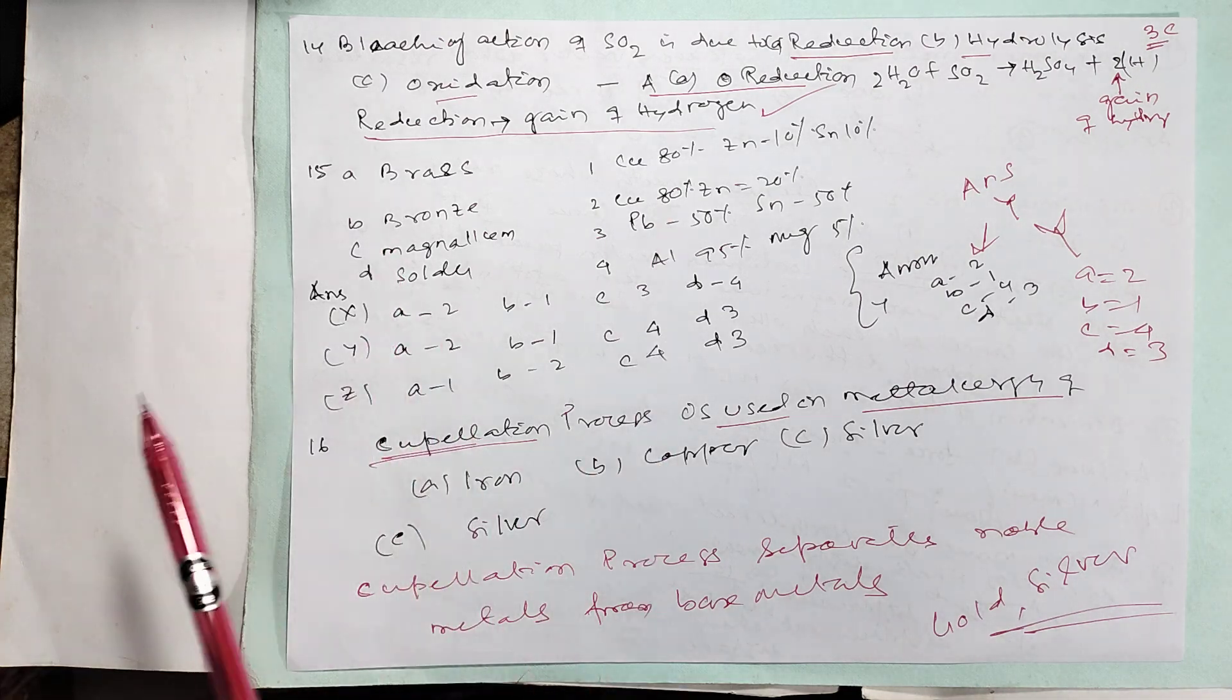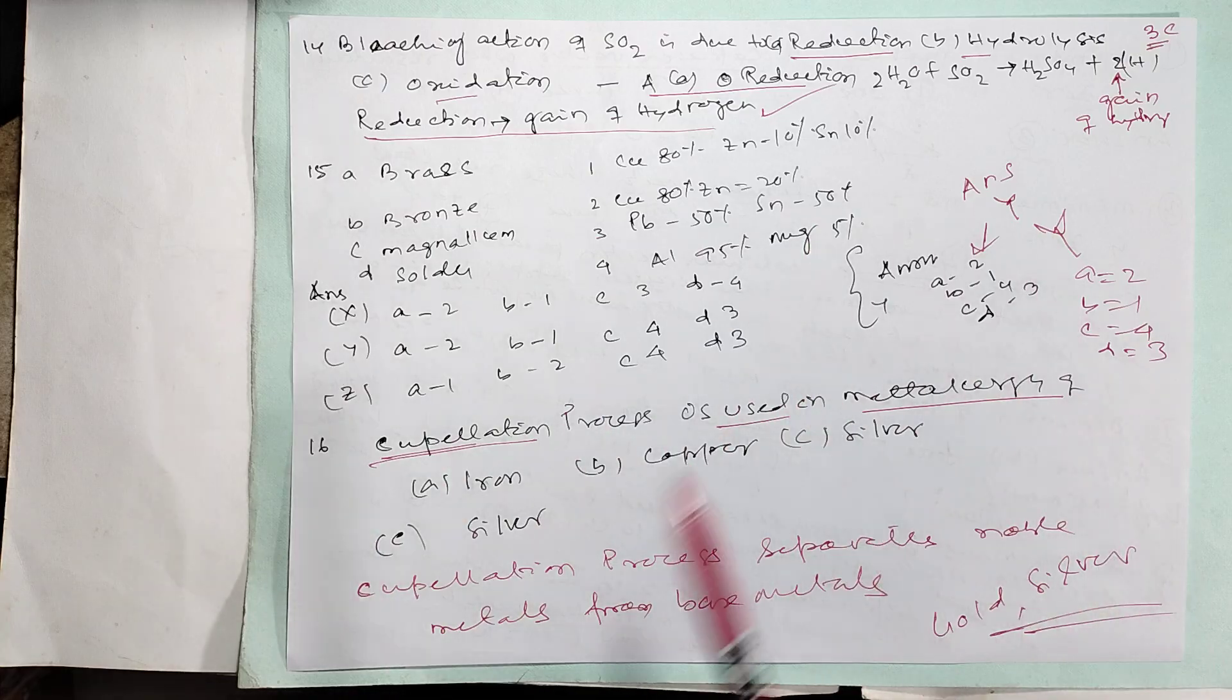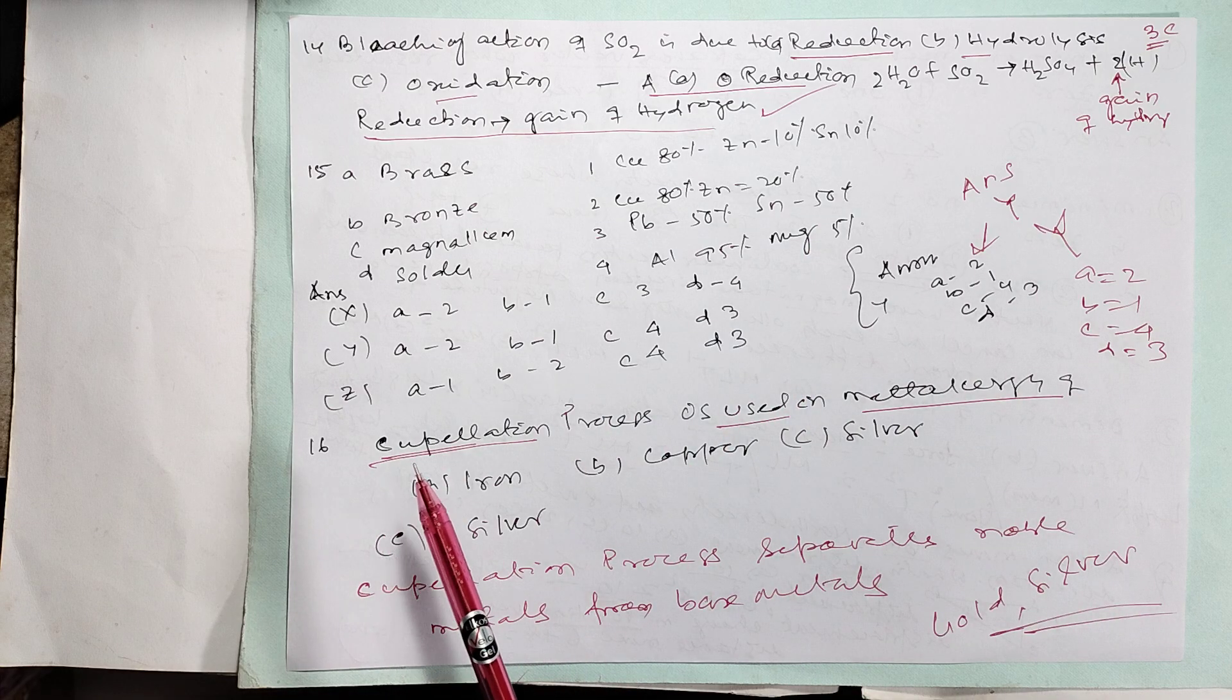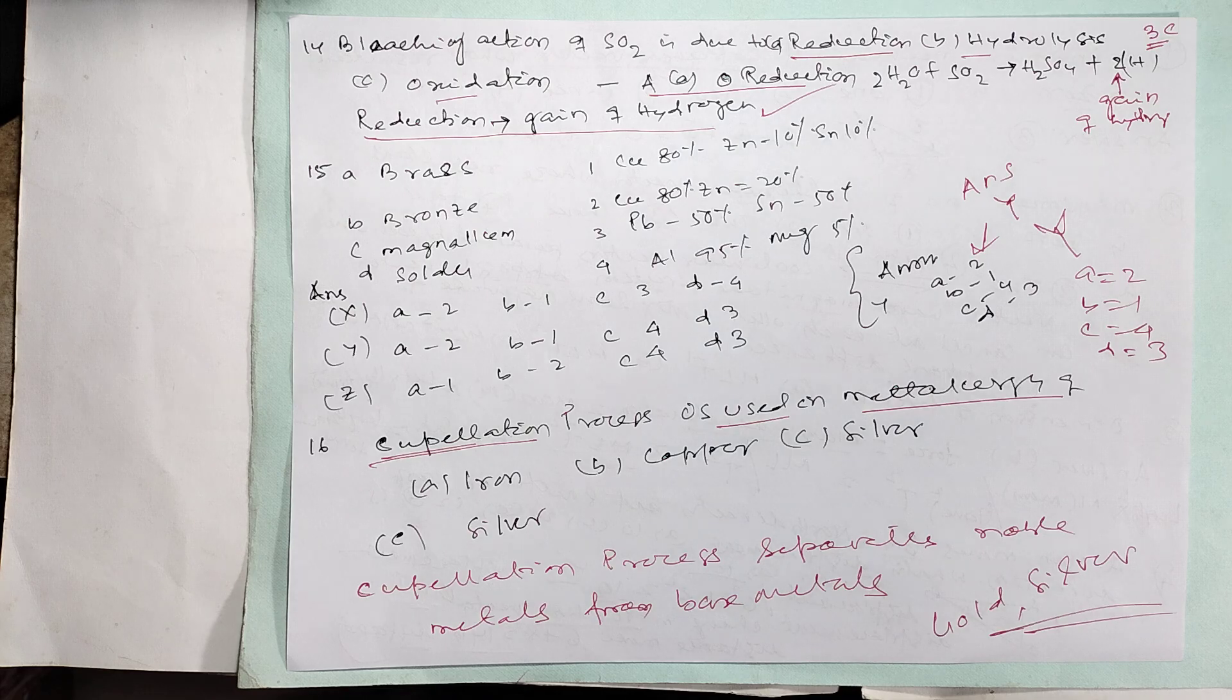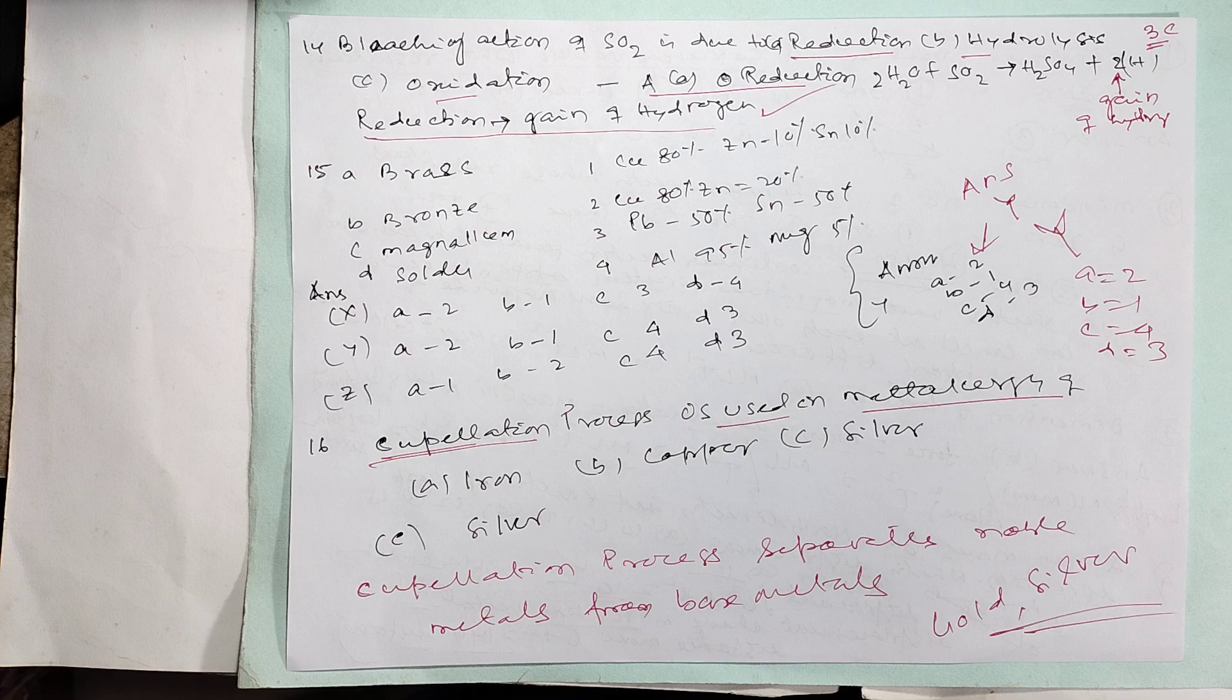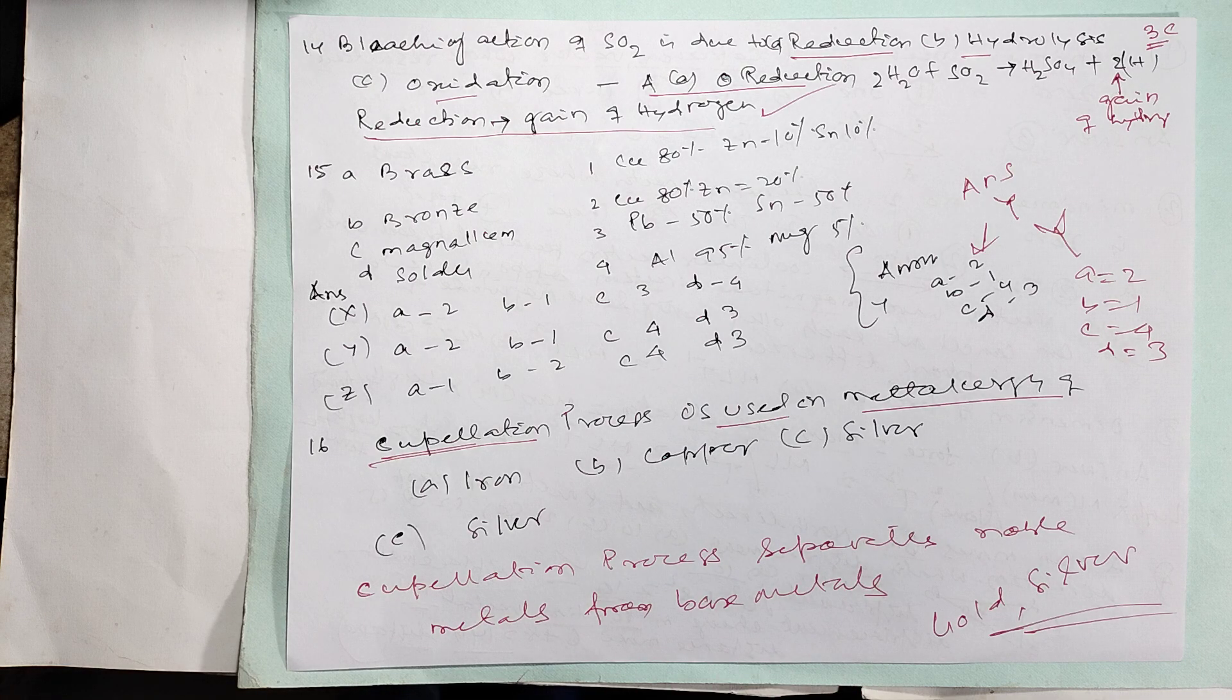Brass, bronze, and magnalium are alloys. You have to calculate this—no need. Most important: the cupellation process is used for refining noble metals, gold and silver. In this case, it is silver. Completed.